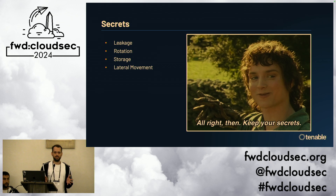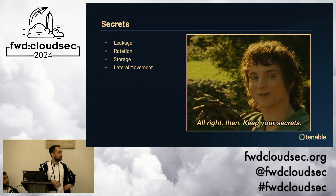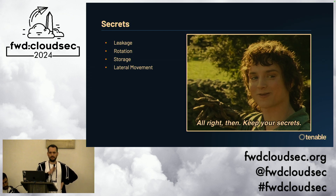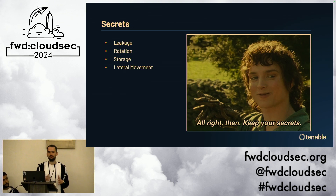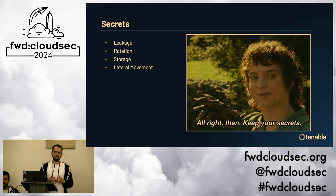With secrets, the issues should be familiar: they leak all the time, and once they leak, they're never forgotten. Rotation schedules are always difficult, and storage is a challenge, especially in hybrid situations. Secrets are probably the most-used vector right now for these cloud hops — attackers land on a machine, find a secret, and hop. They land on a CI/CD, find a cloud credential, and make the hop.